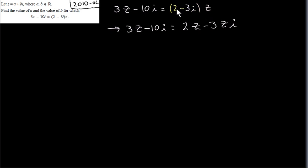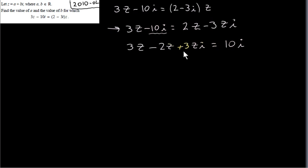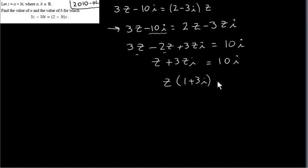Bringing all terms involving z to one side: 3z minus 2z gives 1z, and we also have plus 3zi. Moving terms that do not involve z to the right hand side — the only such term is minus 10i, which becomes plus 10i on the right. So we have 1z plus 3zi equals 10i. Factorizing z out gives z times 1 plus 3i equals 10i.